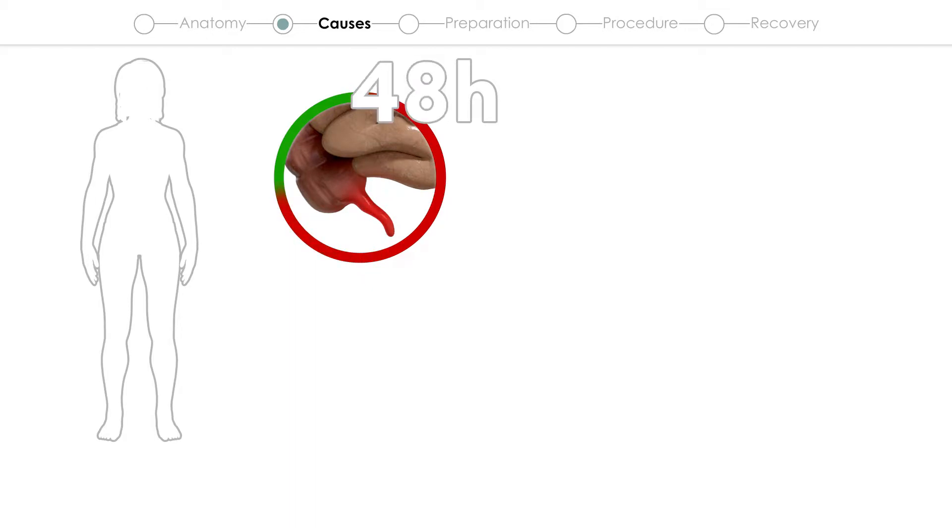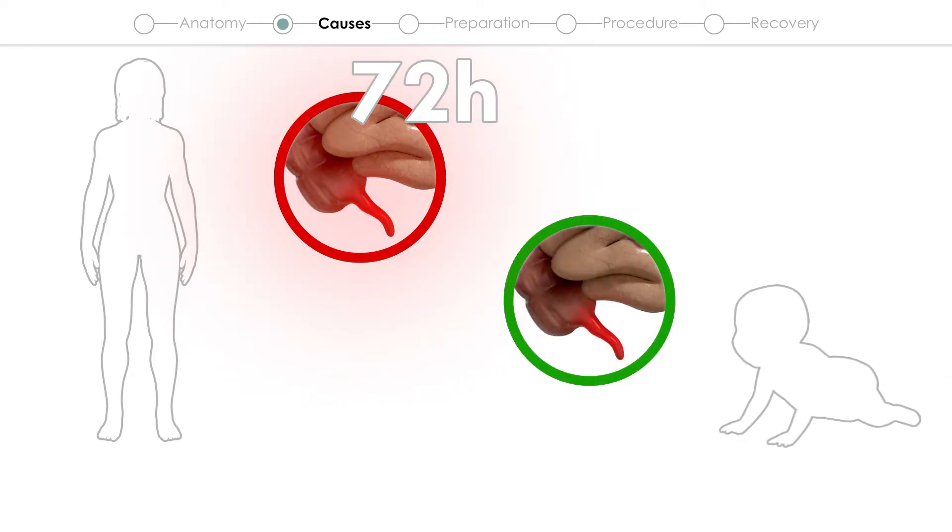From the onset of symptoms, it can take an adult two to three days before the appendix bursts. In children, the process is much faster, and in very young children can be as short as 12 hours.